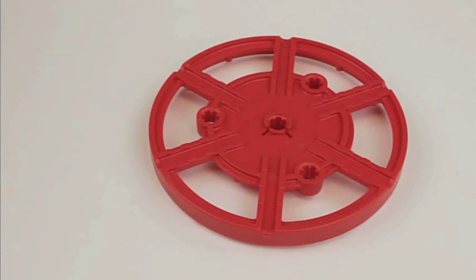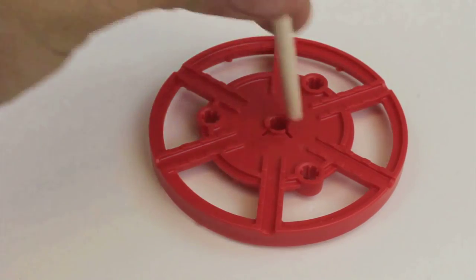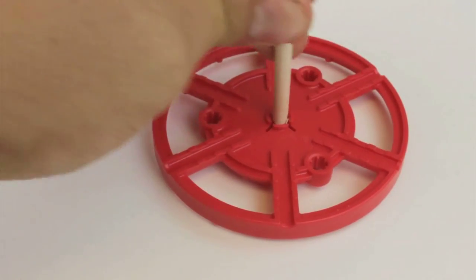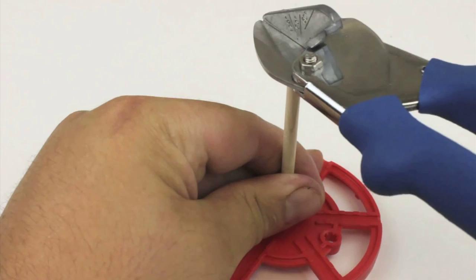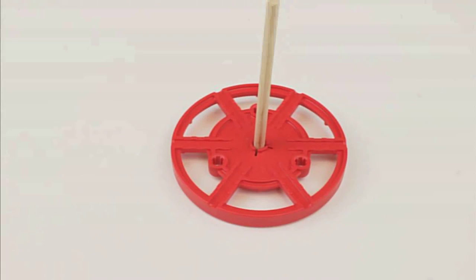Cut 2 dowels that are 85mm long which is about 3 3/8ths of an inch. Place the dowel into a wheel. If it is a little tough you can use a pair of multi cutters to tap it in. Make 2 sets of wheels.